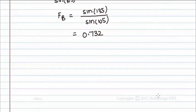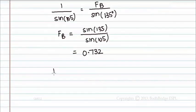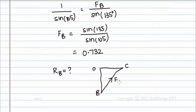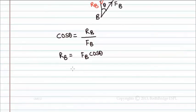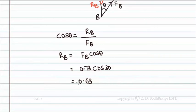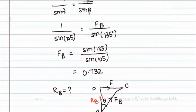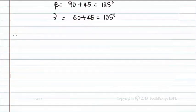But the question asks for the vertical reaction force at B. From triangle OBC, we know FB and angle theta = 30 degrees. Using cos(theta) = RB/FB, we get RB = FB × cos(30°) = 0.732 × cos(30°), which equals 0.63 kN. So the correct option for question 48 is Option A: 0.63 kN.